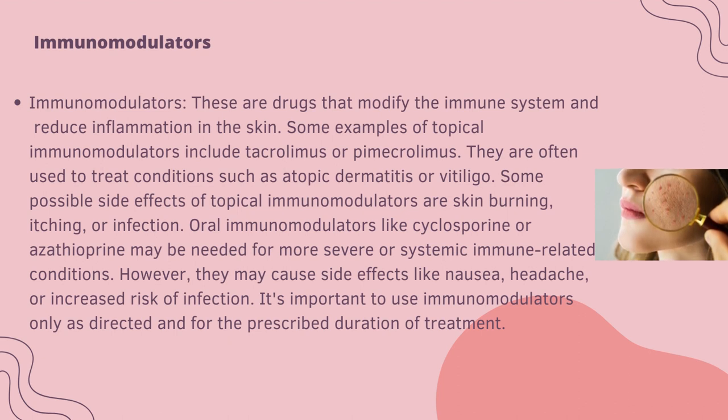Immunomodulators are drugs that modify the immune system and reduce inflammation in the skin. Some examples of topical immunomodulators include tacrolimus or pimecrolimus. They are often used to treat conditions such as atopic dermatitis or vitiligo. Some possible side effects of topical immunomodulators are skin burning, itching or infections. Oral immunomodulators like cyclosporine or azathioprine may be needed for more severe or systemic immune conditions; they may cause side effects like nausea, headache or increased risk of infection. It is important to use immunomodulators only as directed and for the prescribed duration of treatment.